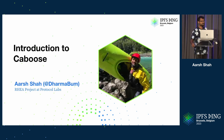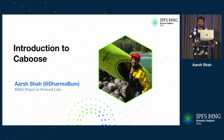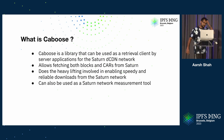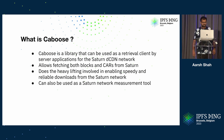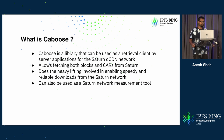We'll see how it goes. So today I'm going to talk about project Caboose. We started building it in late February, so it's really only been a month and a half of active development. There's not a lot, but there's still some that I want to talk about and hopefully get feedback on how we can improve it. So what is Caboose? It is a library that can be used as a retrieval client for server applications that want to retrieve content from the Saturn DCDN network.